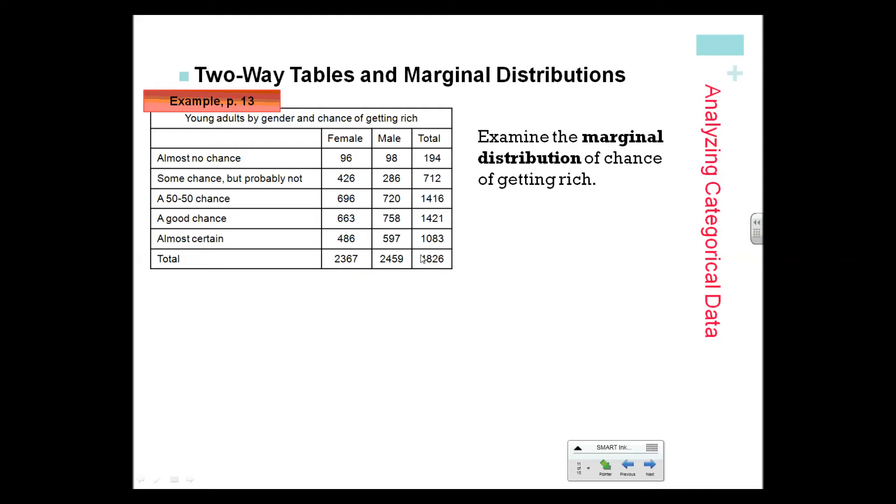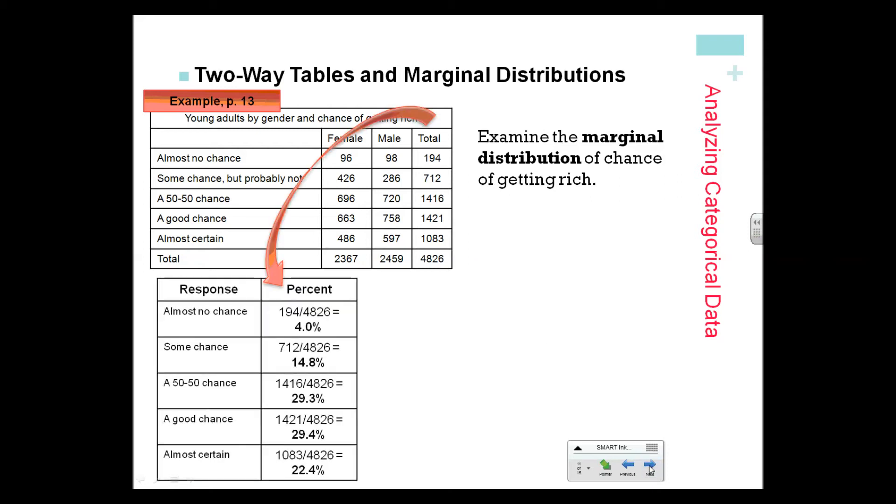The percent of people total who answered almost no chance would be 194 divided by 4,826. So you always need to make sure you're answering the question that you're being asked. 4% would be that total. The total amount of people who answered some chance is 14.8%. This has nothing to do with gender—this is the total percent out of the full total, 4,826 people, how they answered.